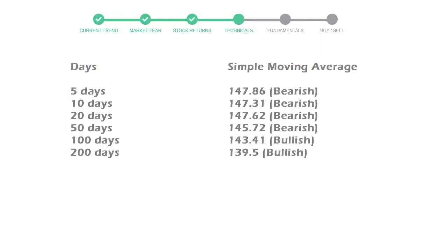The moving average indicates what could be the next footprint of the stock price in the near future. The 5-day average is 147 with a bearish indication, the 10-day is 147 with a bearish indication, and the 20-day average is 147, which is also a bearish signal.